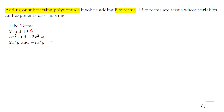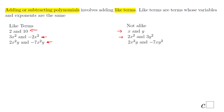Another example of like terms: we have the same variables x and y, and x has the same power in both expressions, and y the same — it doesn't matter that the numbers are different. Here are three examples of terms that are NOT alike: different variables, different degrees. Even though we have the same variables x and y, if one has x squared and the other has just x, or one has y and the other has y squared, these are not alike — we cannot combine them.